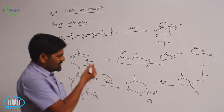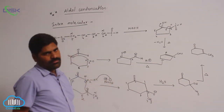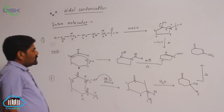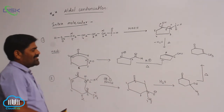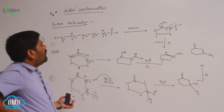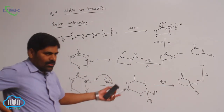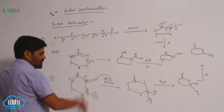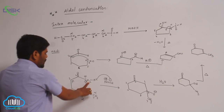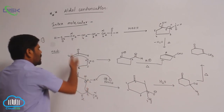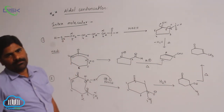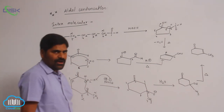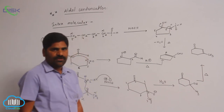This is the exclusively formed product — a six-membered ring. Within the molecule, due to the presence of two carbonyl groups on the same molecule, condensation takes place within the molecule. That is the reason why this product is exclusively formed. This is the second example of intramolecular aldol condensation. Thank you very much.